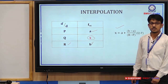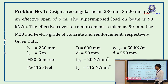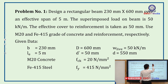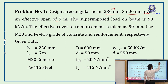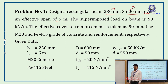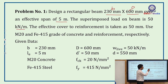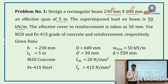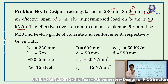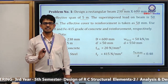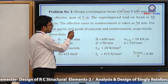Now let's solve a problem: Design a rectangular beam of size 230 mm × 600 mm with an effective span of 5 m. The superimposed load is 50 kN/m. The effective cover to reinforcement is 50 mm. Use M20 grade of concrete and Fe415 grade of steel. Since it says 'superimposed load' without mentioning self-weight, we consider this as live load only and must calculate the self-weight.